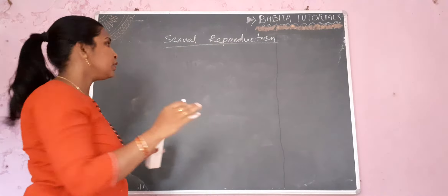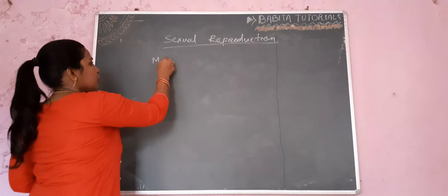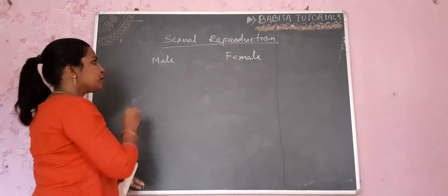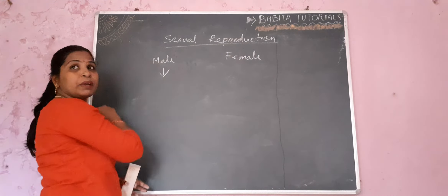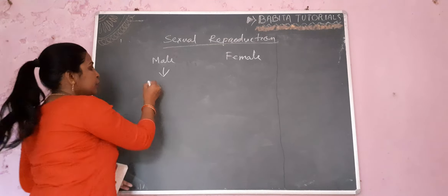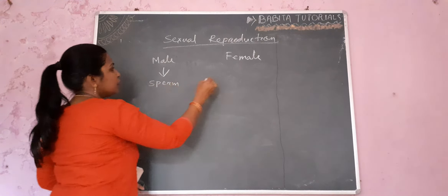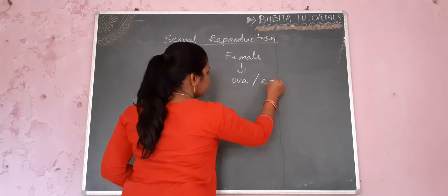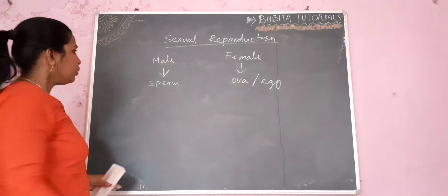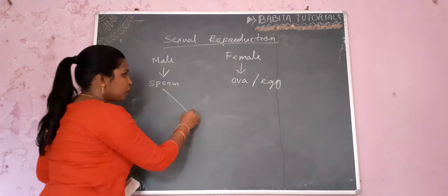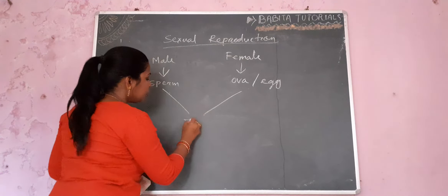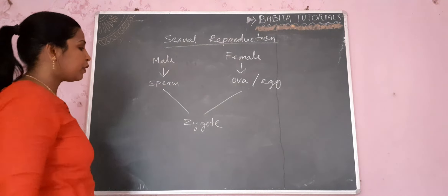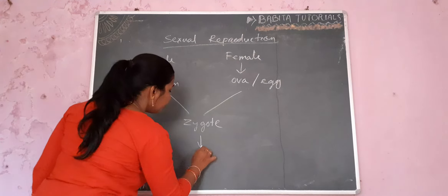In sexual reproduction, two organisms are involved: one will be the male and another will be the female. The male gives rise to the male gametes. In the case of animals, the male gamete is known as sperm and the female gamete is the egg. When the sperm and egg are fused, they form the zygote. The zygote divides and develops into the embryo.